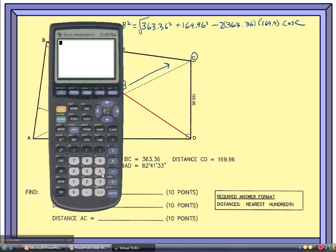Okay. So in the calculator, 363.36 squared. Oh, are you kidding me? No decimal, please. Plus 169.96 squared minus 2 times 363.36. Oops.